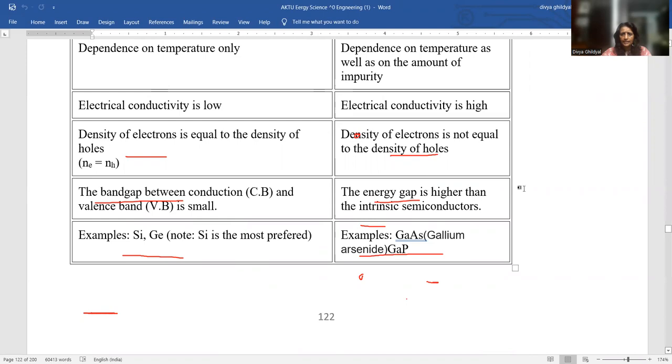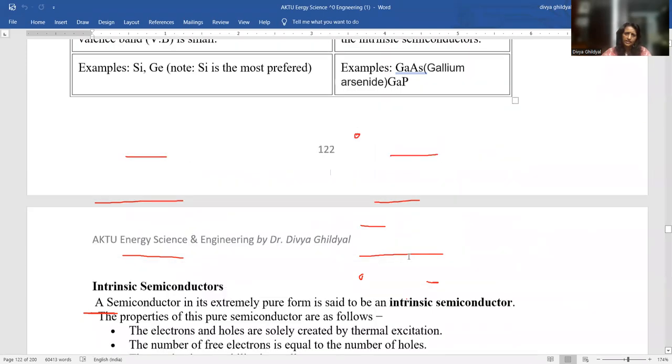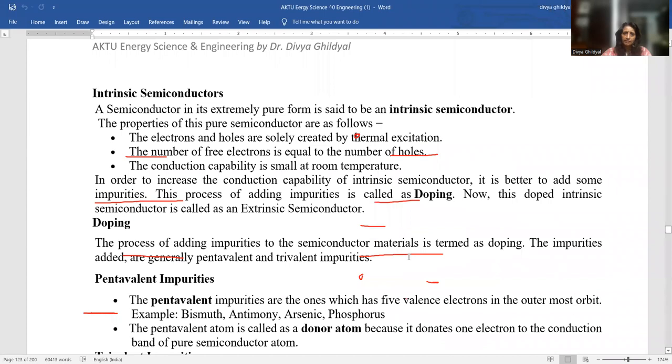Intrinsic semiconductors: the electrons and holes are closely created by thermal excitation. Number of free electrons. All this word file is there in the drop-down box. Once you subscribe to my channel, immediately you will get the access to this word file.